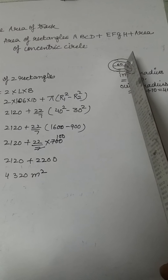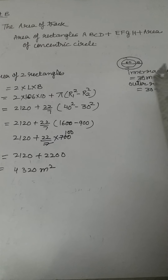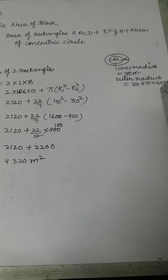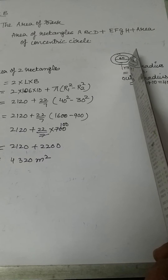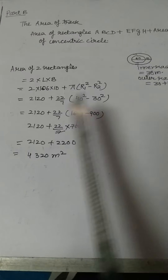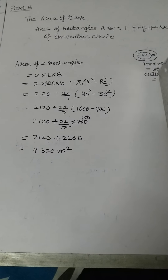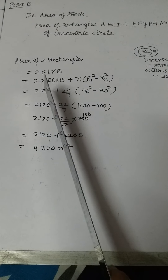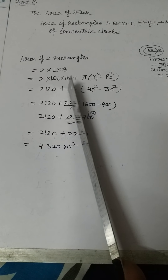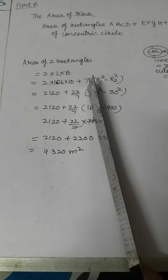The inner diameter of the concentric circle is 60 meters, and the width of the track is 10 meters. So the inner radius is 60 ÷ 2 = 30 meters. The outer radius will be 30 plus 10 — the width of the track is added — giving an outer radius of 40 meters. For the two rectangles, the length is 106 meters and the breadth is 10 meters, which is the width of the track.